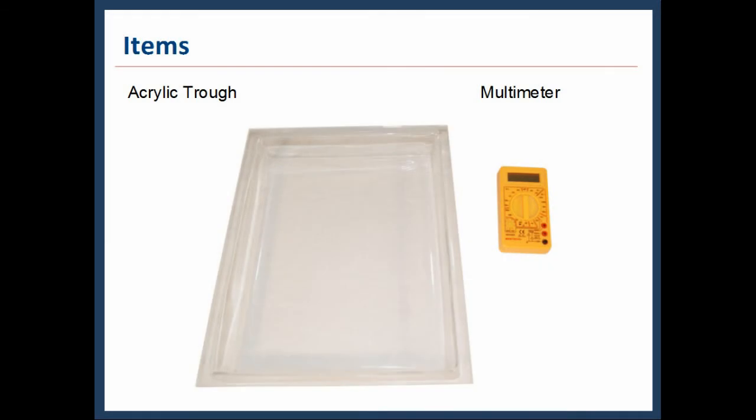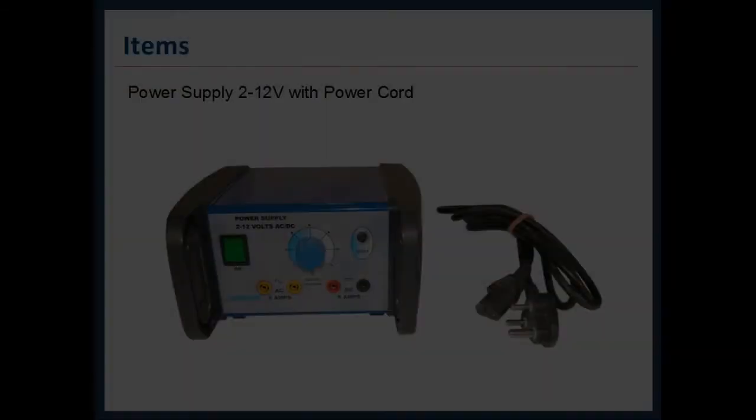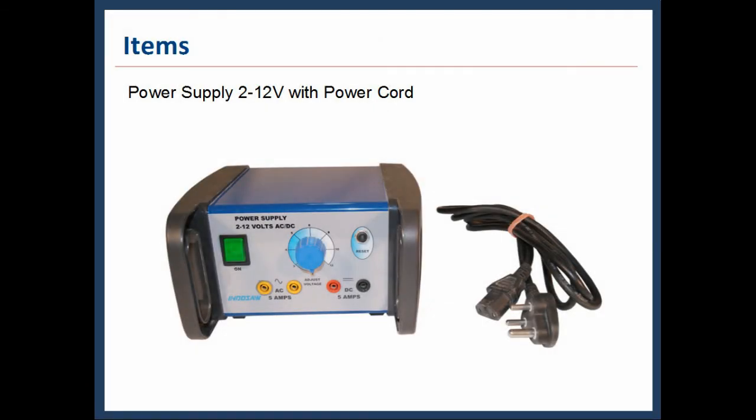At first, we will look into the items provided with this experimental setup. The first item is an acrylic trough. Second item is a digital multimeter. We need a power supply unit which is provided with the power cord.